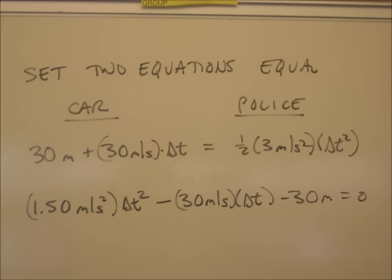When we put these equal together, we can rearrange this into a quadratic equation, which turns out to be 1.5 meters per second squared times Δt² minus 30 meters per second times Δt minus 30 meters equals zero. This is a quadratic equation. If you forgot how to solve for the roots of the quadratic, you can check your textbook on page 1042.